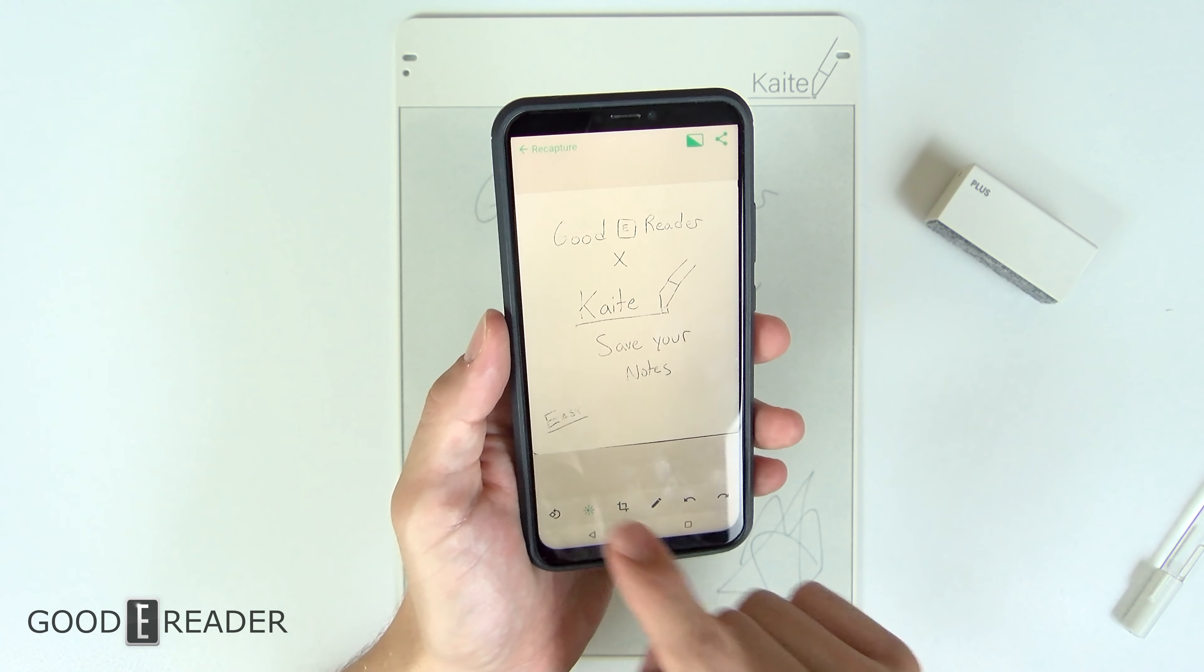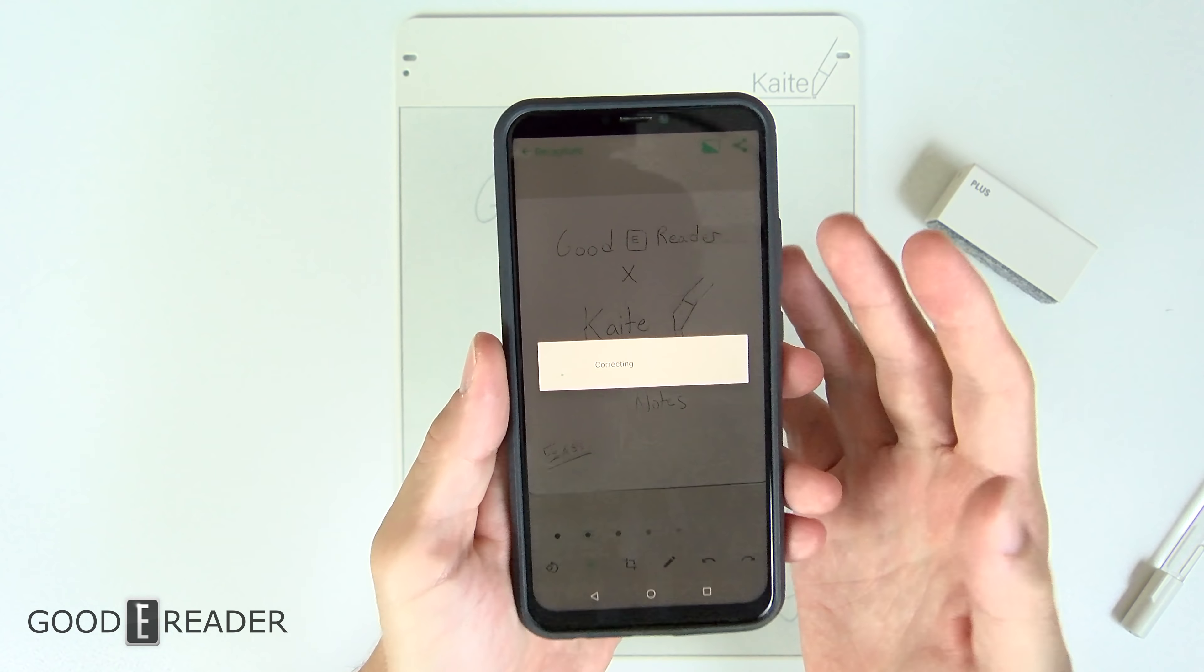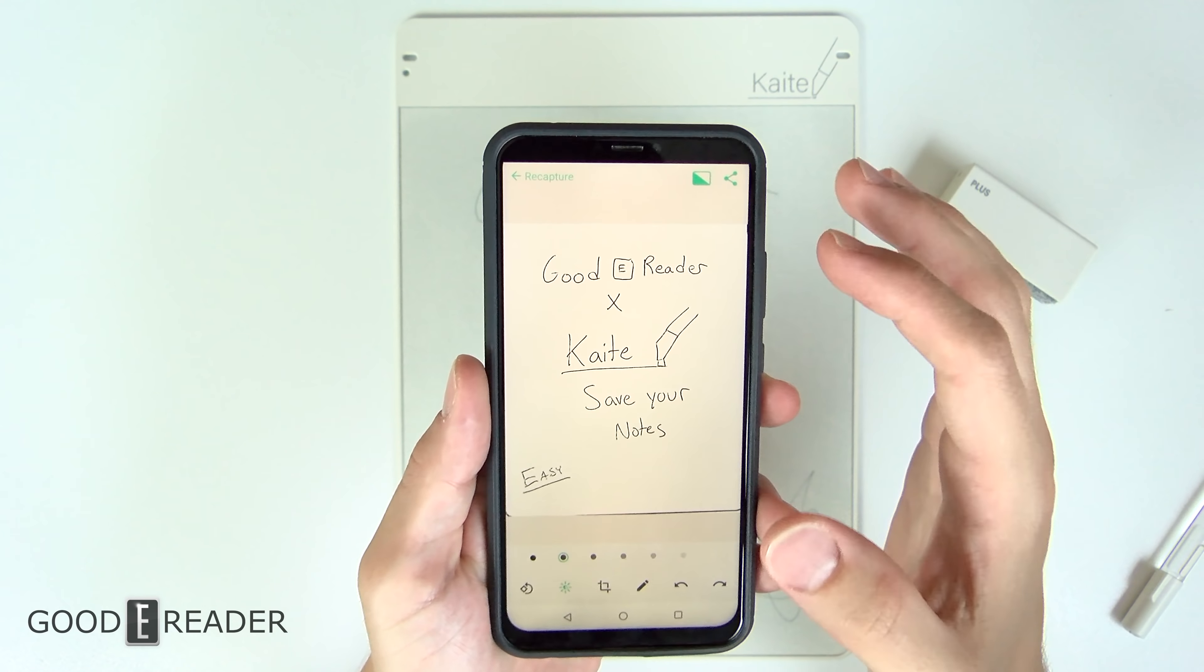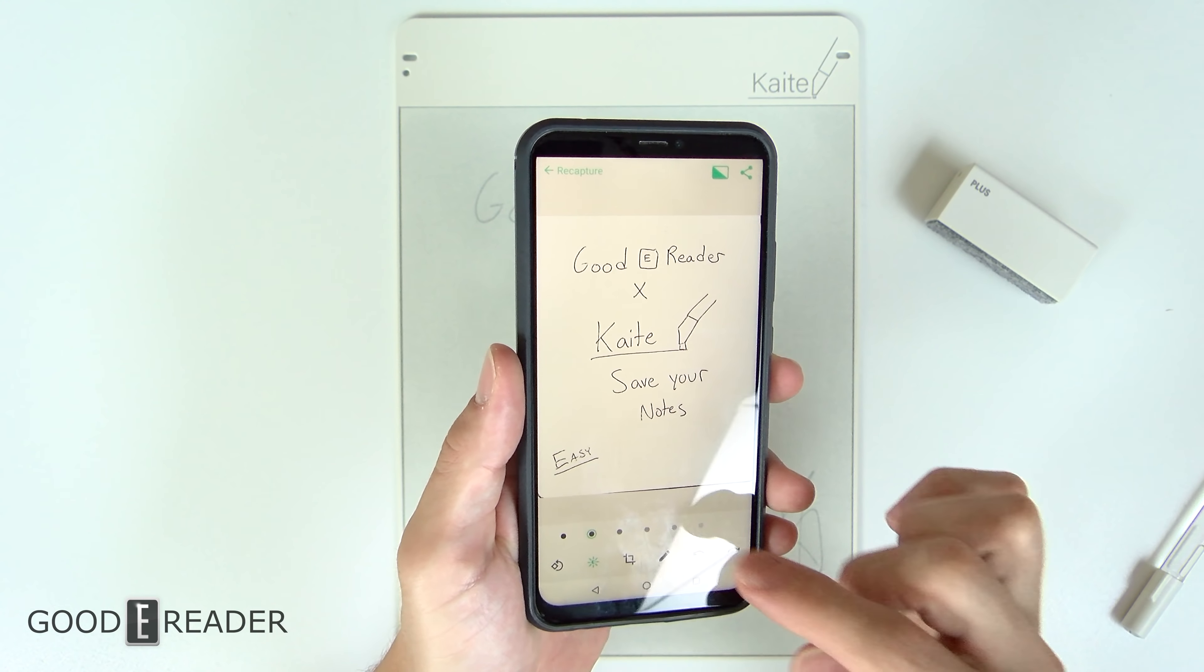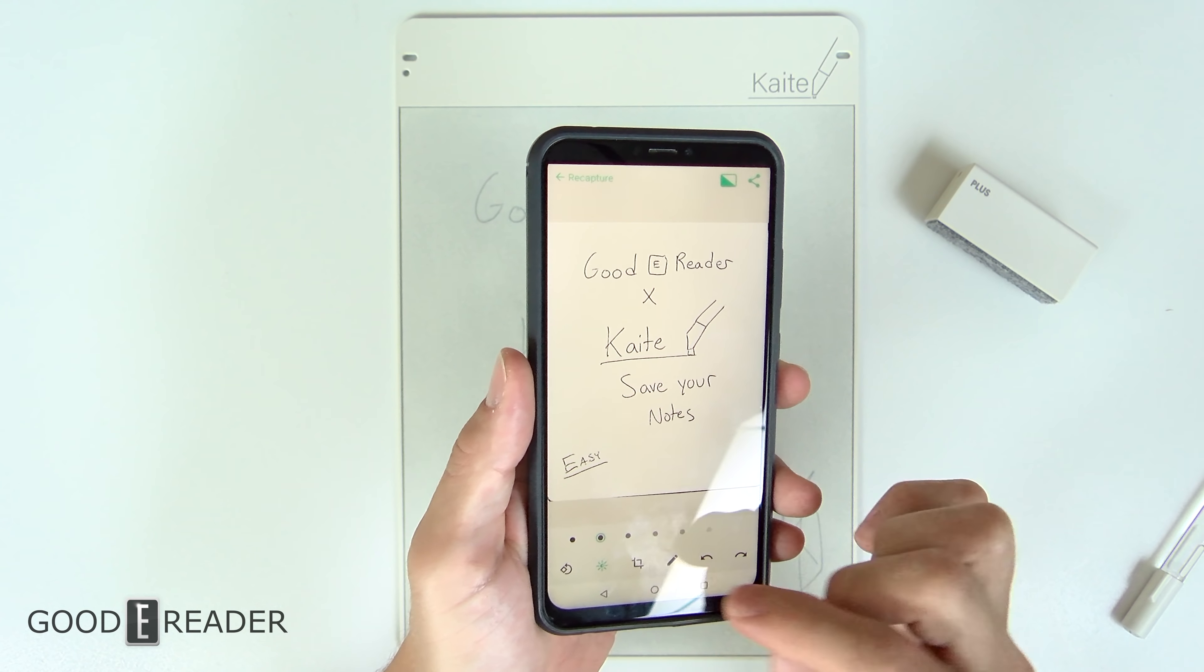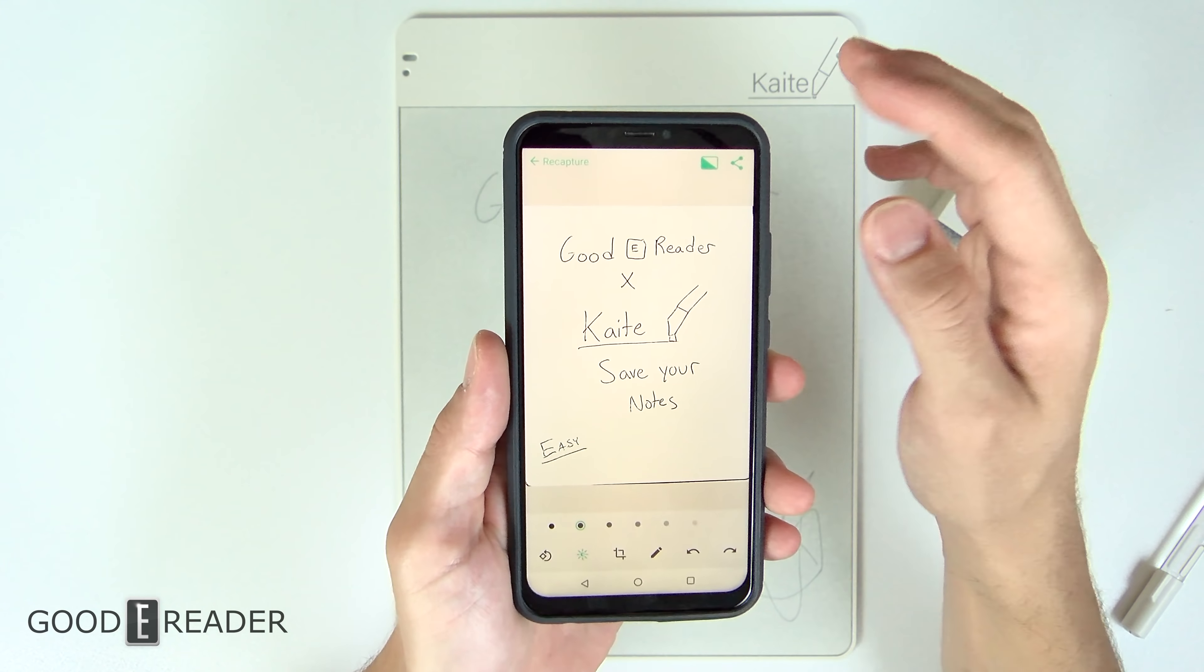And from here you can rotate it, you can change the contrast, you can actually make the lines and everything darker. You can back forward, you can edit it, you can crop it, you can change any of the things you want to write on it,